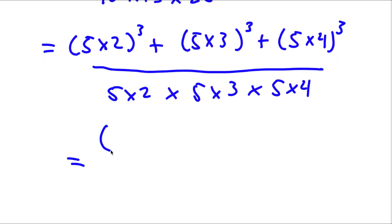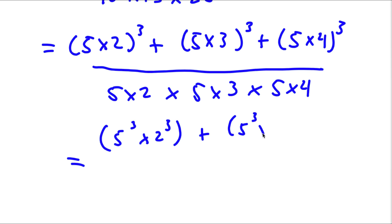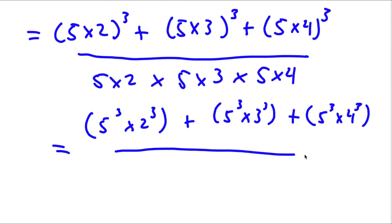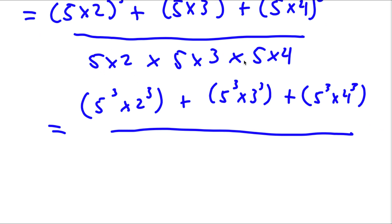Now this is equal to 5³ times 2³, plus 5³ times 3³, plus 5³ times 4³, all over — there are three 5s here — 5³ times 2 times 3 times 4.